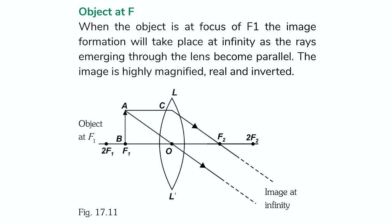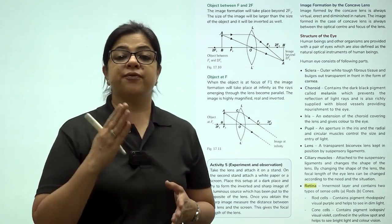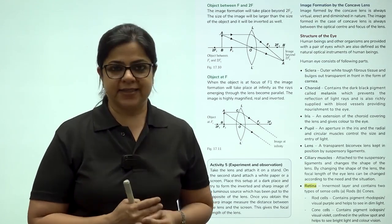When the object is between f and 2 f, the image formation will take place beyond 2 f2. The size of the image will be larger than the size of the object and it will be inverted as well. When the object is at focus of f1, the image formation will take place at infinity as the rays emerging through the lens become parallel. The image is highly magnified, real and inverted. It is all a matter of where the object is.